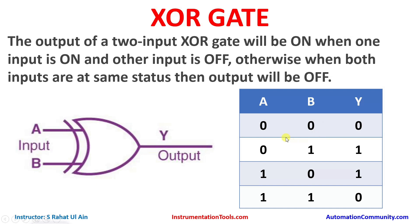As you can see in the table, when both inputs are in the same state, the output is in false state. Here both inputs are in true state — the same state — so the output is also false. When the status of two inputs is different, one in false state and another in true state, the outputs are in true state.